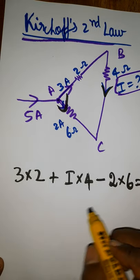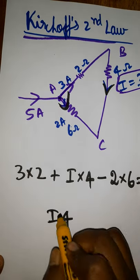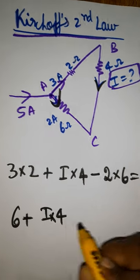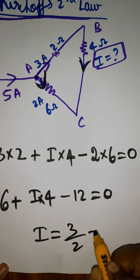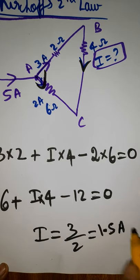If you are solving this, I is going to be 4 times, I 4 times, that's going to be 6 plus minus 12 is equal to 0, finally I is equal to 3 by 2, you can get as a 1.5 ampere.